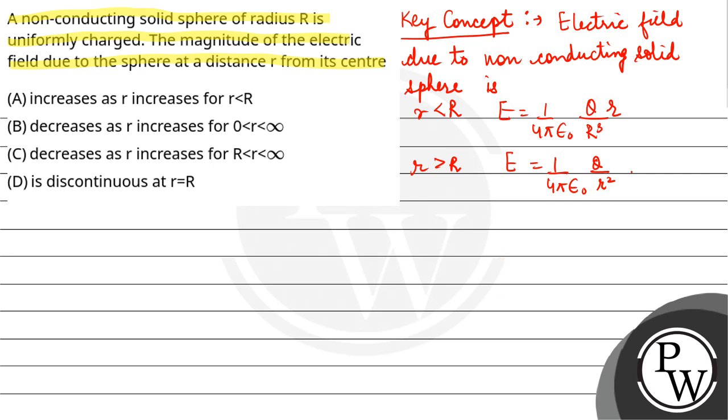If we plot them, electric field versus r, this is the electric field. Inside, the electric field varies linearly with r. This is the linear graph. After that, as r is increasing, this follows the inverse square law.